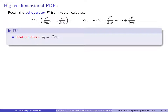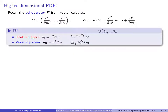In R^n, the heat equation is u_t equals c squared times the Laplacian of u, and the wave equation is u_tt equals c squared times the Laplacian of u. In one dimension these reduce to u_t = c² u_xx and u_tt = c² u_xx. The function u is always a function of x_1 up to x_n and time t, but the Laplacian only includes the sum of second spatial derivatives — that is, d²/dx_1 through d²/dx_n.